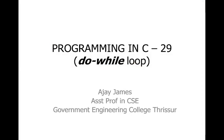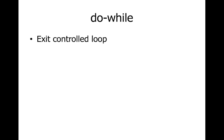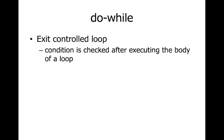In the previous lecture we covered the while loop. In this lecture we look at the do-while loop. It is a kind of while loop, but the key difference is: the while loop is an entry control loop, whereas do-while is an exit control loop. Exit control means the condition is checked after executing the body of the loop.